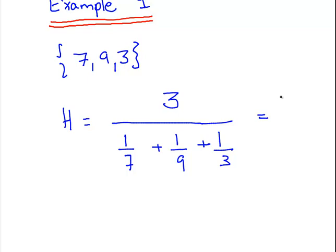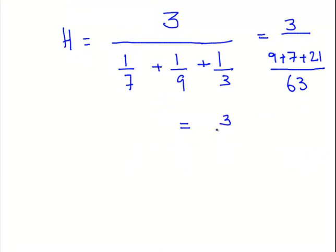Working that out, we will get 3 over... Let's put everything over 63. That worked the last time. 9 plus 7 plus 21 over 63. So it would work out to be 3 over 37 divided by 63, or in other words, that would be 189 divided by 37.